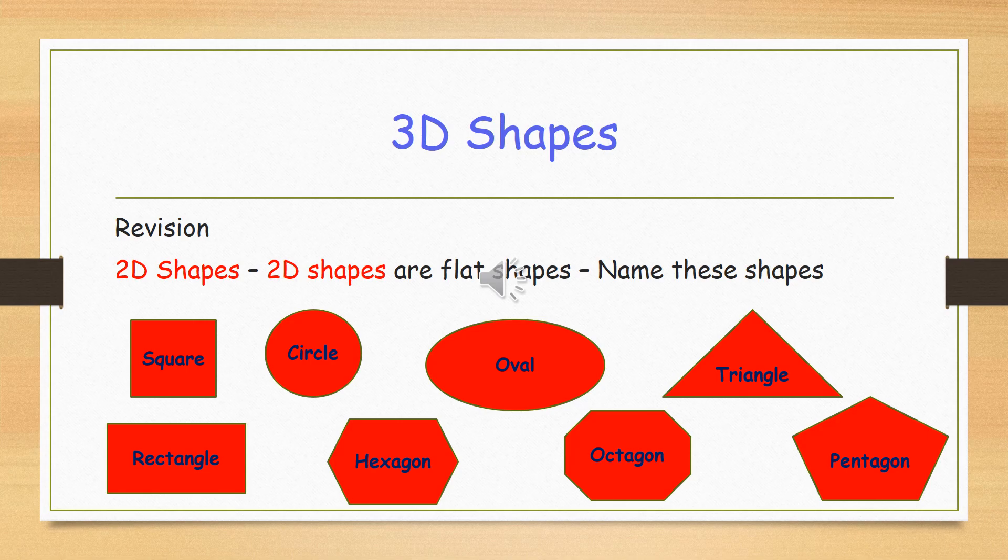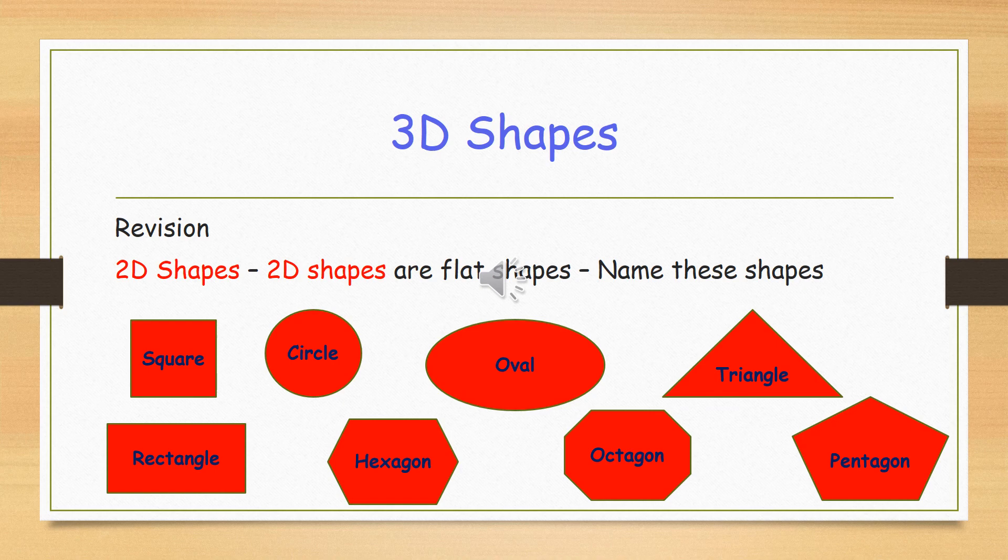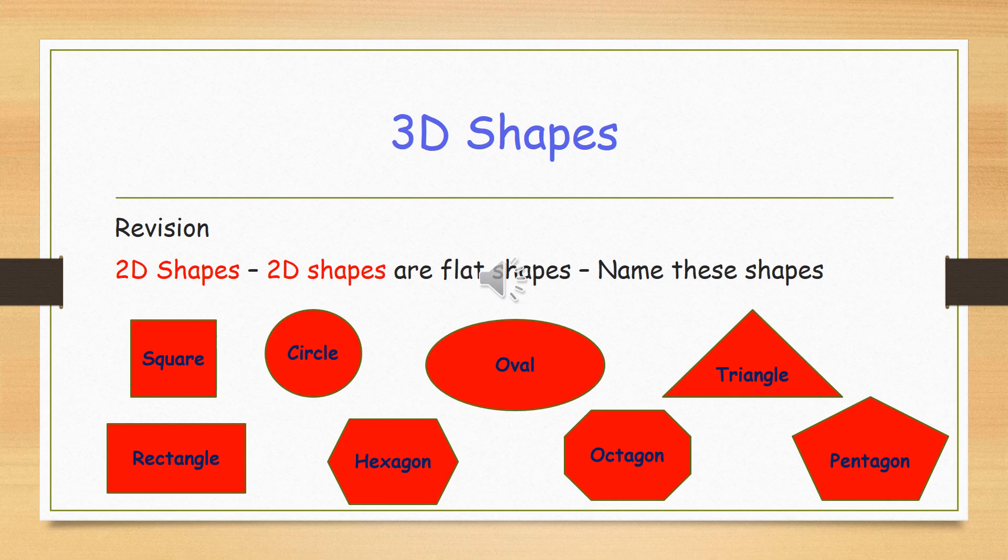First of all, we have a square, then we have a circle, an oval, triangle, rectangle, hexagon, octagon, and lastly, a pentagon.